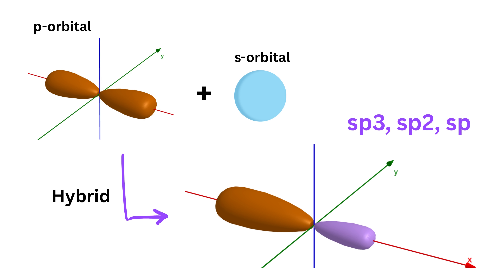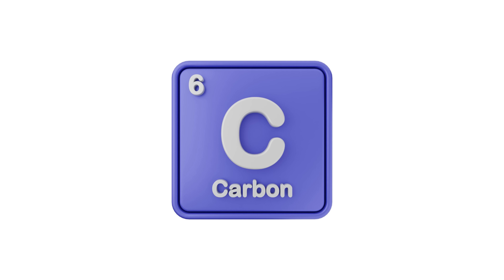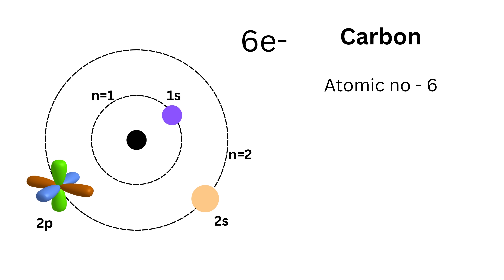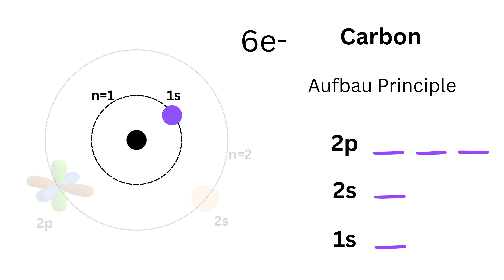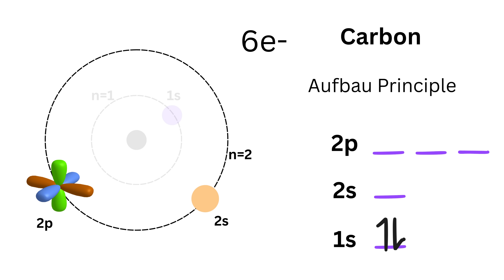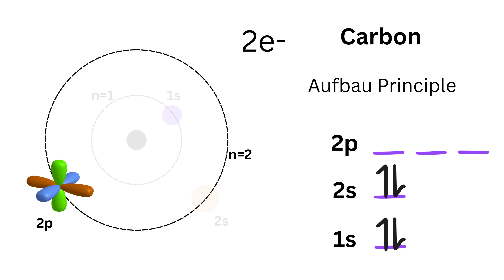Let us talk about hybridization of carbon atoms. Carbon has an atomic number of 6, meaning a neutral atom has six electrons to place into its orbitals. We always start with the lowest energy room and fill upward — this is known as the Aufbau principle. The first energy level, n equals 1, has only one spherical room: the 1s orbital, which can hold a maximum of two electrons. So we place the first two of carbon's six electrons here, filling it completely. Next, we move to n equals 2, which has one 2s and one 2p orbital. The 2s room fills up with the third and fourth electrons, leaving two more electrons to be placed into the 2p subshell.